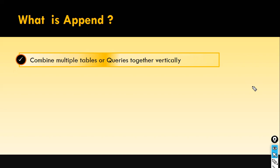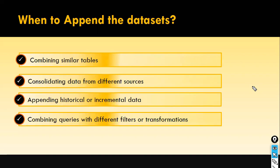Now the question is: what kind of scenarios can I append the dataset? If you want to combine week one and week two data into a single file which consists of two weeks of data, then you can go for combining similar tables. What do you mean by similar tables? The structure should be the same.